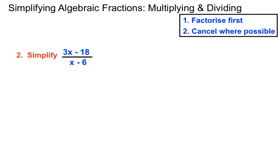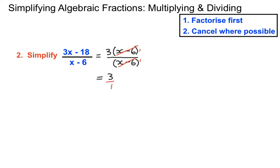Here we can factorise the top — 3 can go into the top. 3 lots of x makes 3x; we ask ourselves 3 lots of what makes minus 18, which is minus 6. Now we had an x minus 6 on the bottom, so we can divide the bottom by x minus 6 and it goes once and into the top once. The brackets cancel out, putting all those 1s in just in case, and we get 3 — which could technically be 3 over 1, but we don't need to write that 1 in, so just 3 is our answer.